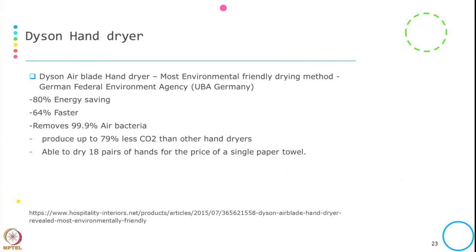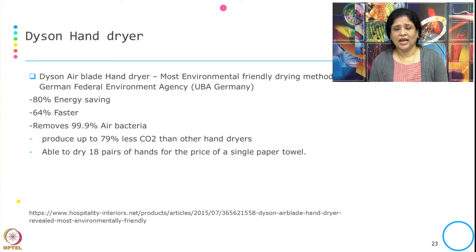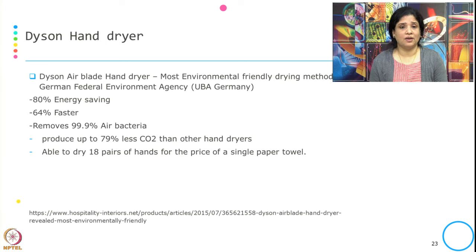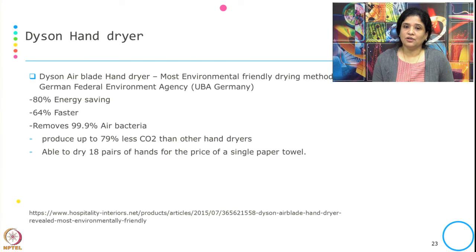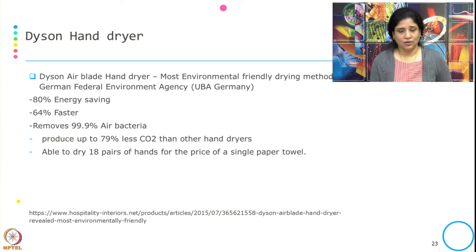The other example is the Dyson Airblade Hand Dryer. The German Federal Environmental Agency (UBA Germany) has certified this as the most environmentally friendly drying method comparing with paper towels, cotton towels, and other standard dryers available in the market. Energy saving from the Dyson Airblade is 80 percent, it is 64 percent faster, removes 99.9 percent of air bacteria, produces up to 79 percent less CO2 than other hand dryers, and is able to dry 18 pairs of hands for the price of a single paper towel. So it is not only environmentally friendly, it also has an implication on cost.